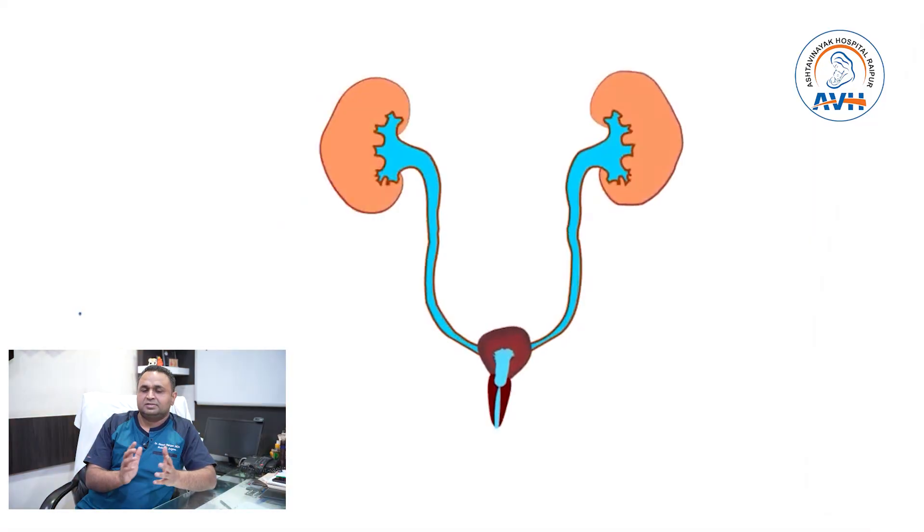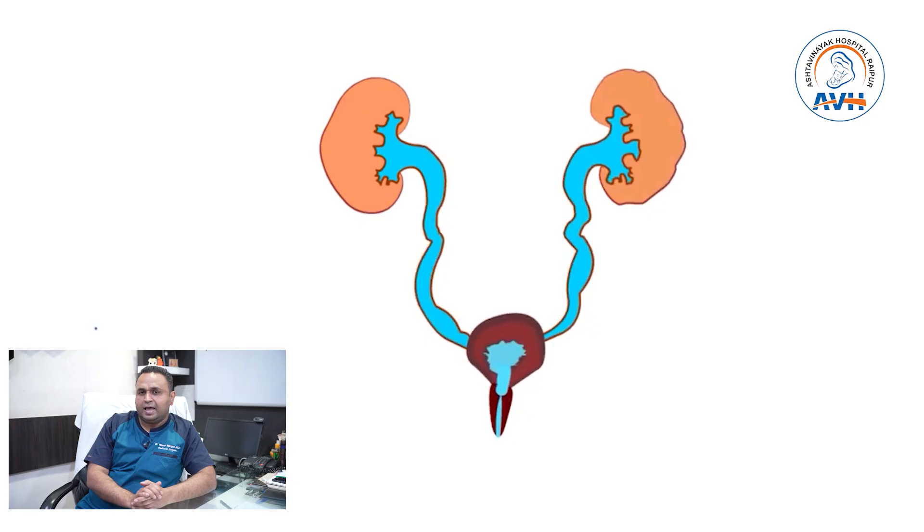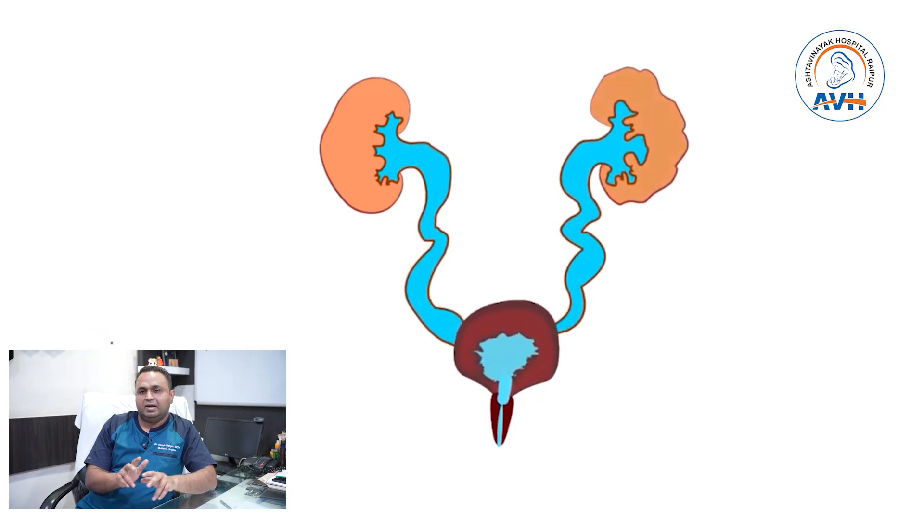We get an idea before the birth of the child that there is some obstruction in the bladder. This oligohydramnios alerts us to tell the parents that there is a chance their child may have posterior urethral valves, and hence the parents can take an independent decision and start treatment during birth itself. After birth, the child will have a distended bladder, a collapsed anterior urethra, and bilateral hydroureteronephrosis.